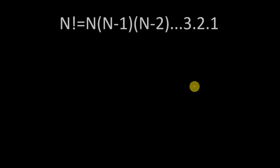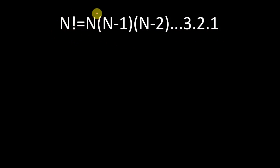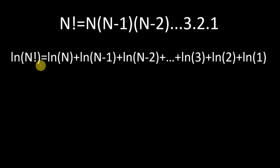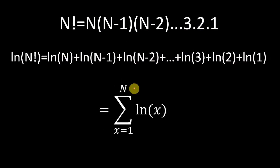Now let us derive it. We can write N factorial as N multiplied by N minus 1, multiplied by N minus 2, and so on to 3 multiplied by 2 multiplied by 1. This number is really big. What we will do is take the log of N factorial, which will change this multiplication into addition and make that number smaller. So log of N factorial equals log of N plus log of N minus 1 plus log of N minus 2, plus and so on to log of 3 plus log of 2 plus log of 1. We can write this as the summation of x from 1 to N of log of x — first log of 1, then log of 2, then log of 3, and so on to log of N.